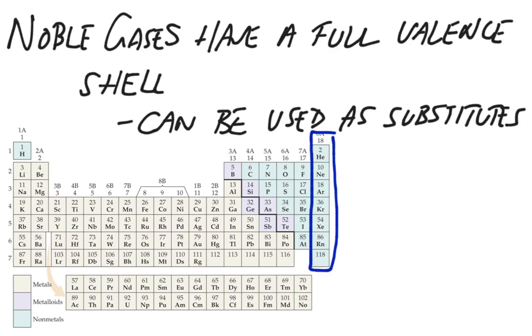All of the elements in this group end in either NS2 or NS2-NP6, where N is the principal quantum energy level. Now, helium is the one exception because it only ends in 2S2.